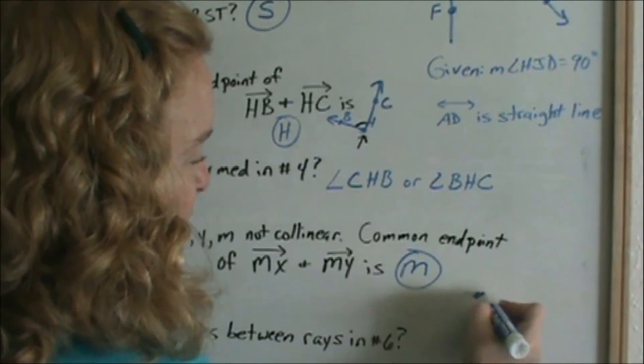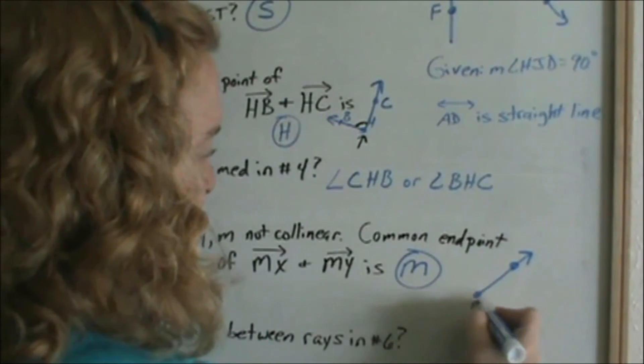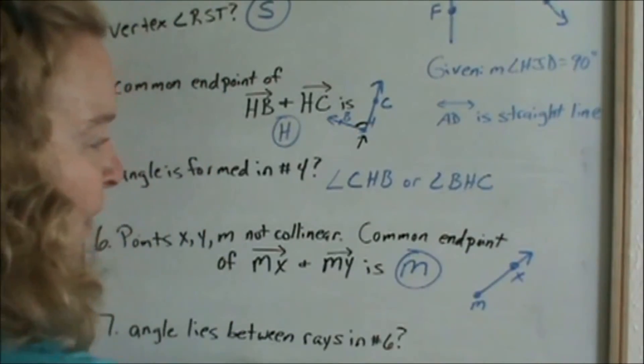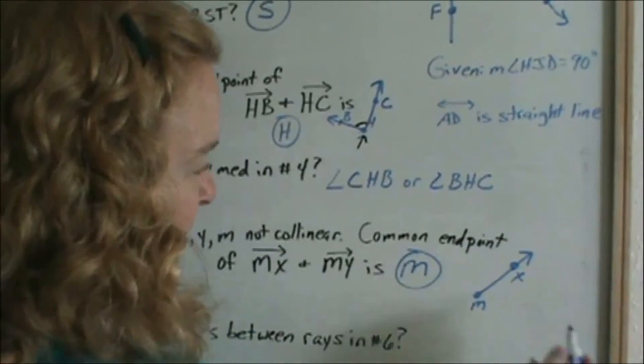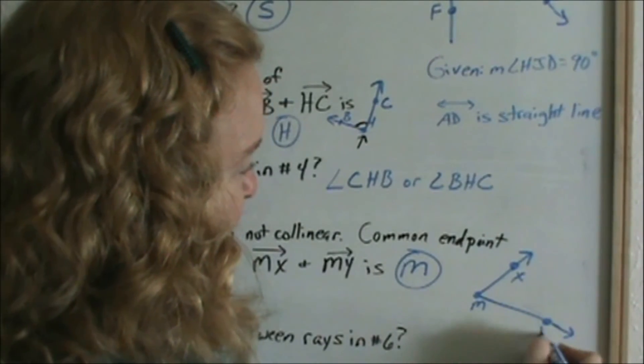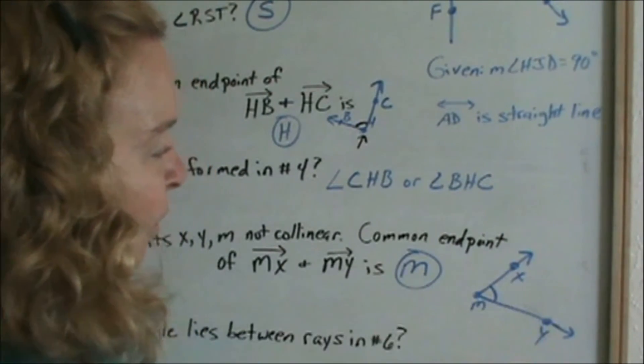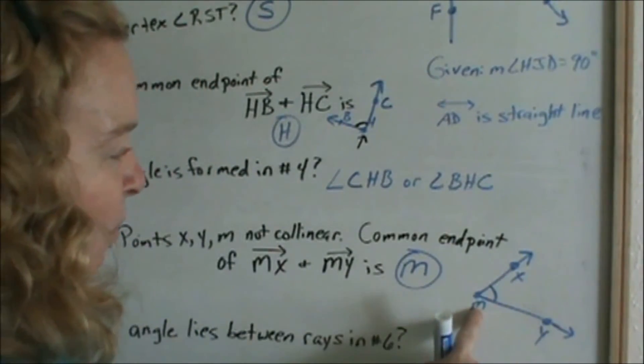So if I was just to draw this, and I can draw them whichever ways I want. There's M, there's X, that's ray MX. And if I did MY, well, I can just draw it however, whatever kind of angle I want to, because it doesn't specify. There's ray MY. I have formed an angle with those two rays, and their common endpoint is M.